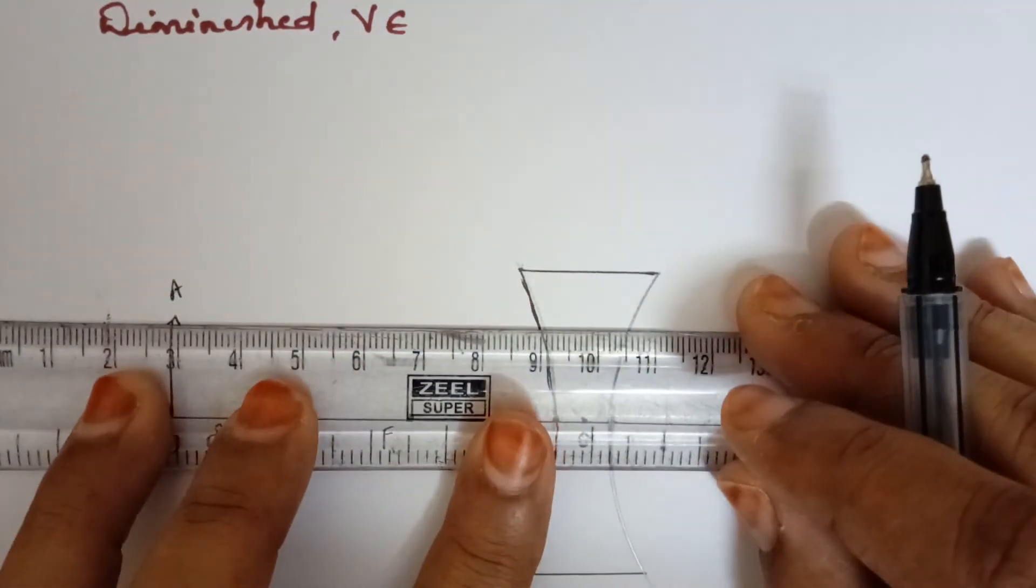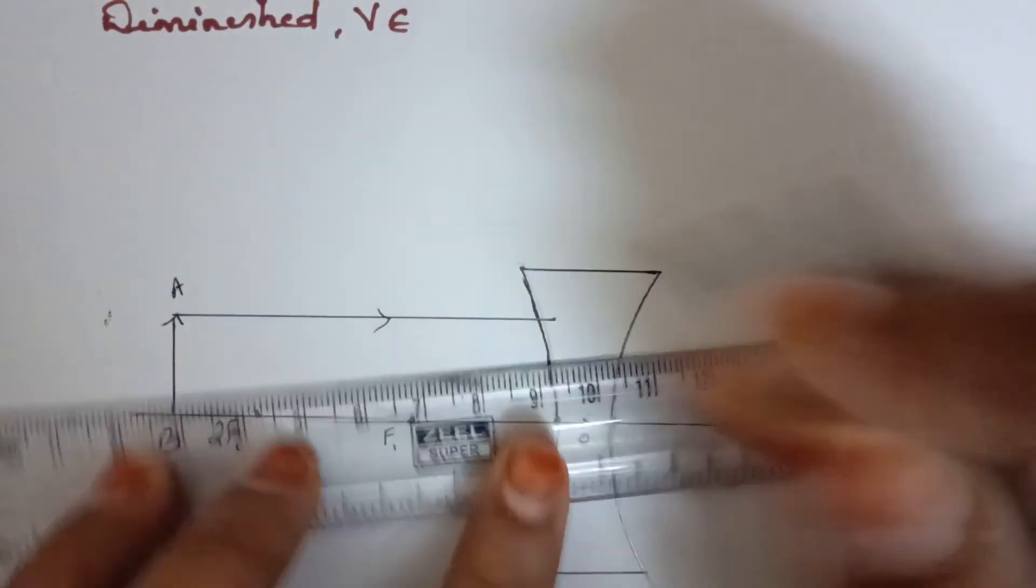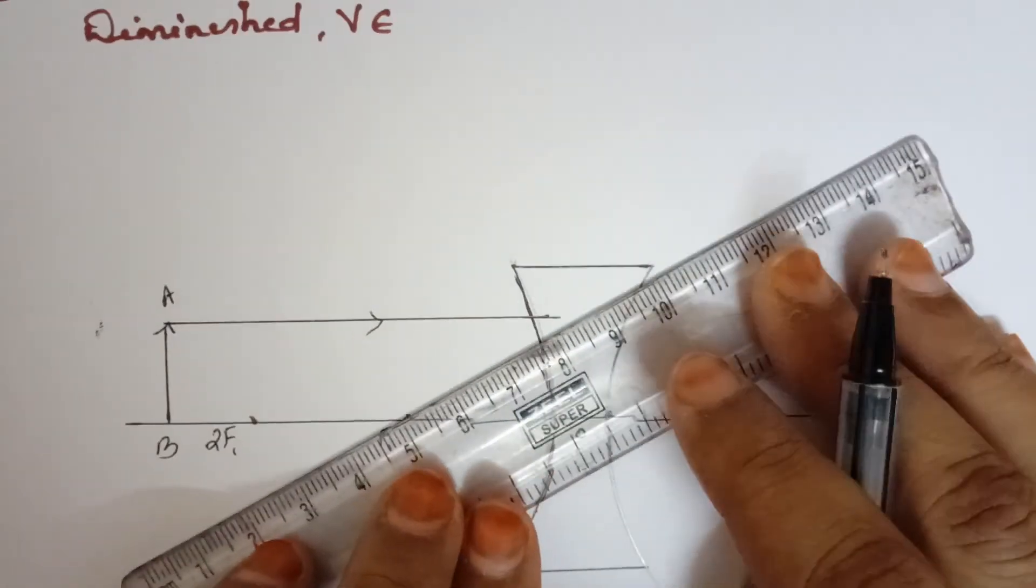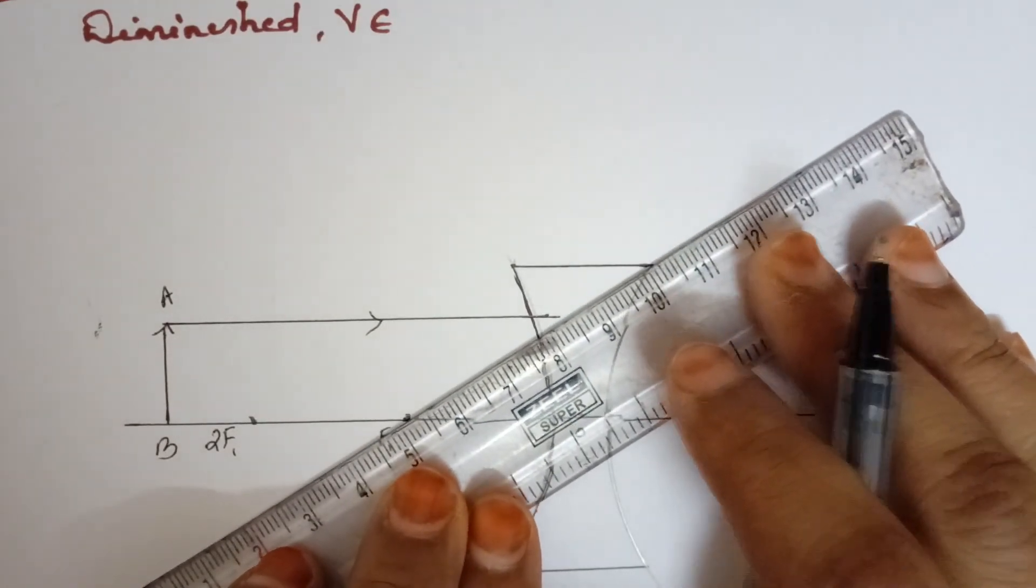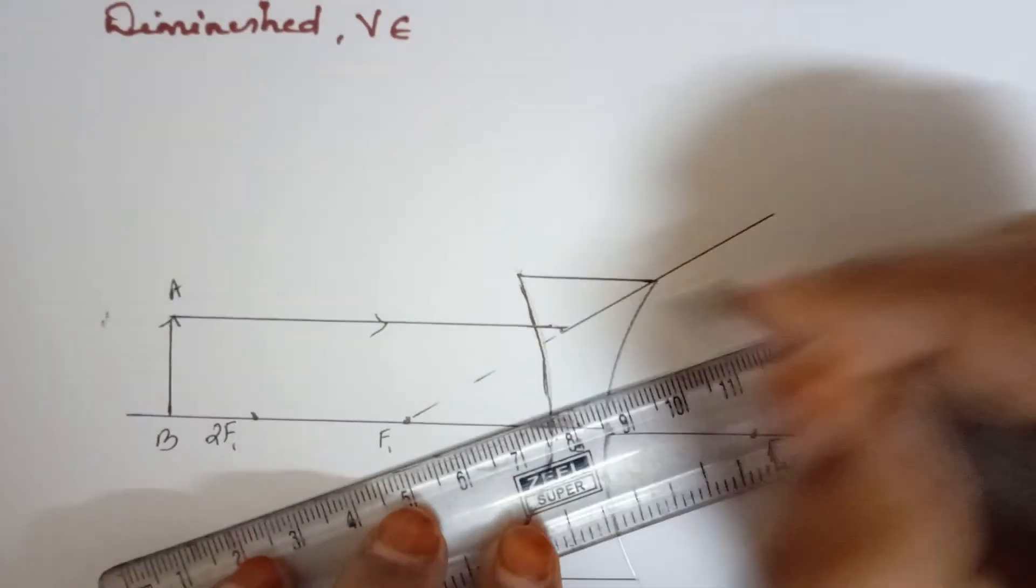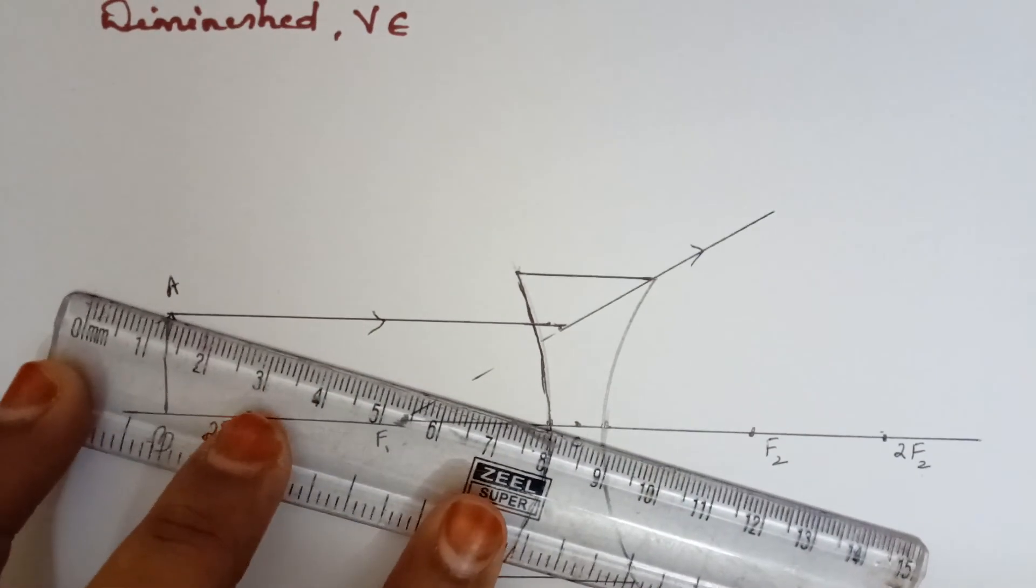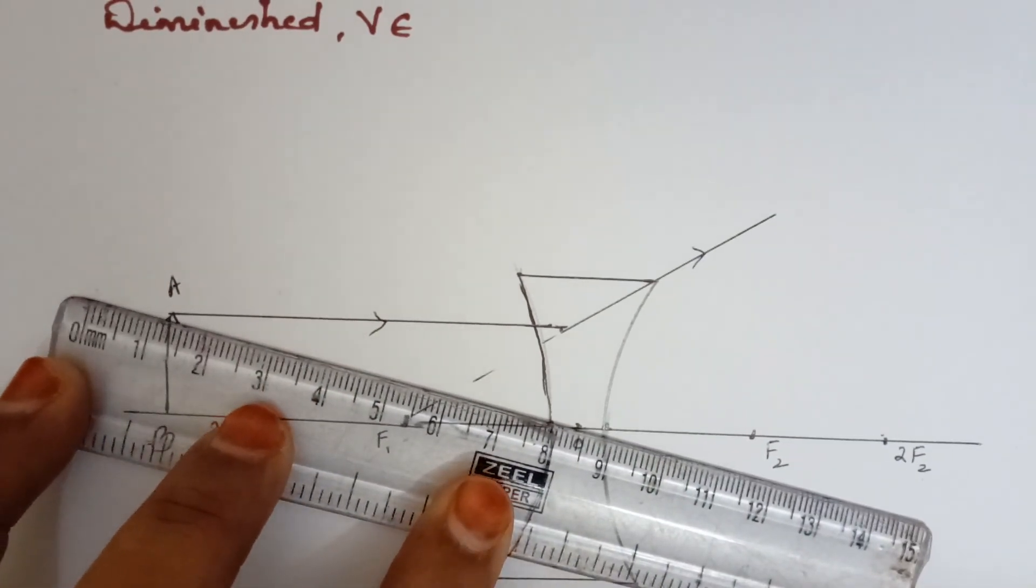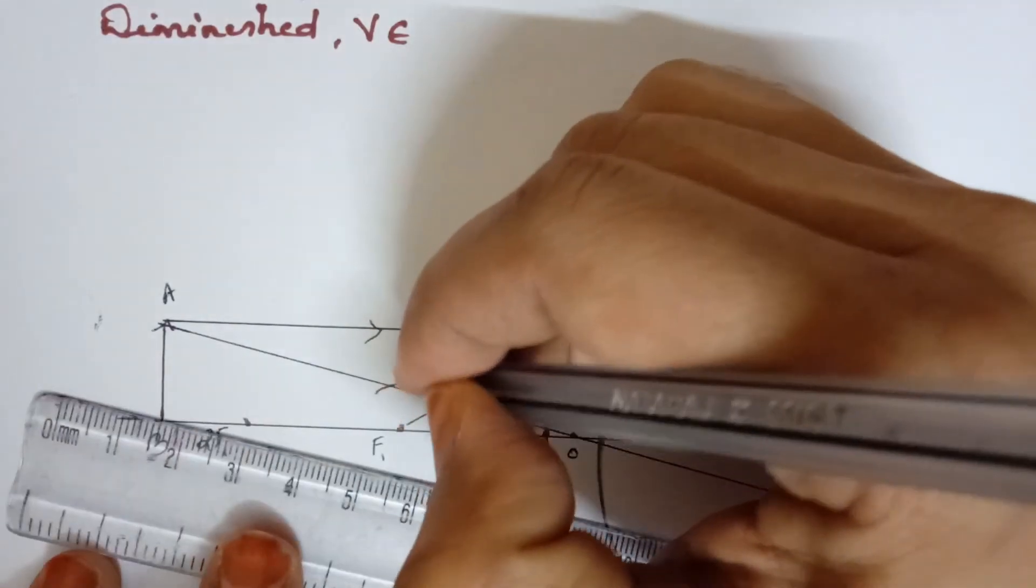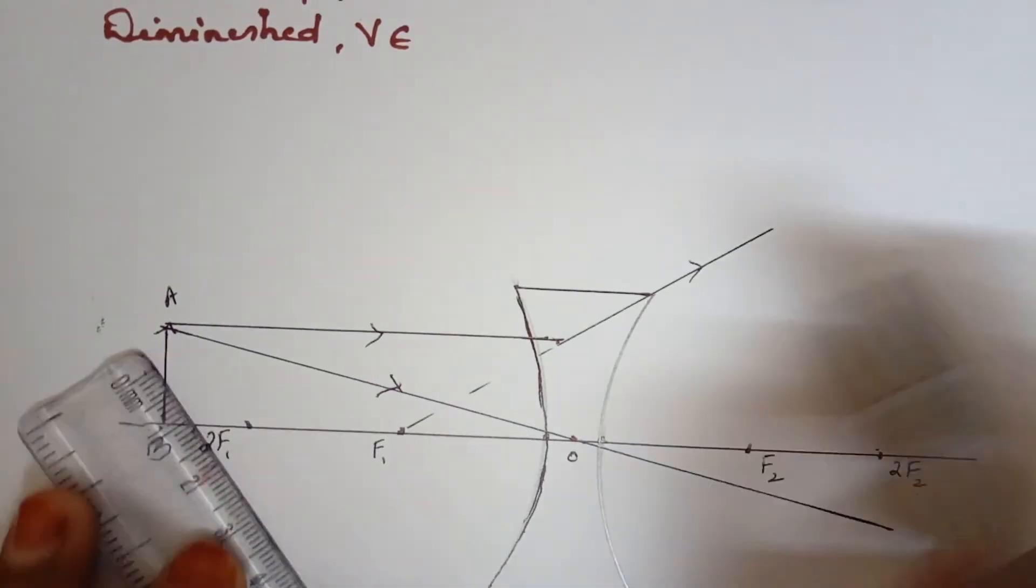And I know that later on it's going to pass through F, or else it looks as if it is coming from F. So I have shown that here. The second ray of light, if you remember, passes through optic center for the lens. So same thing here, it is going to pass through O without any deviation. So you can see here this ray of light and this ray of light is crossing somewhere here.